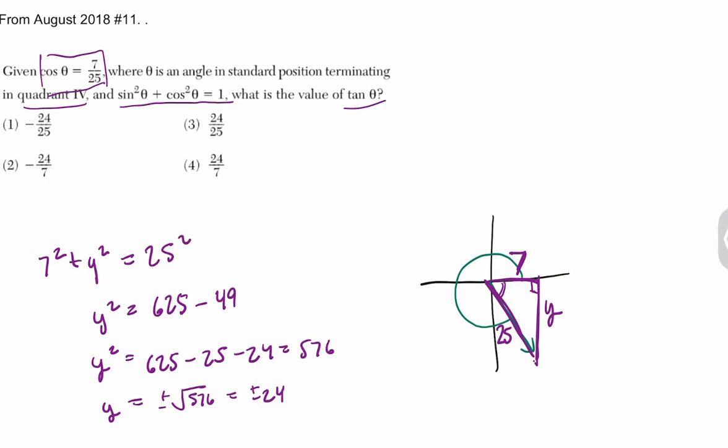However, you can see right here we're in the fourth quadrant, so y is negative, and that's negative 24. So the tangent is going to be opposite over adjacent, so it's this opposite over this adjacent, and it's choice 2.